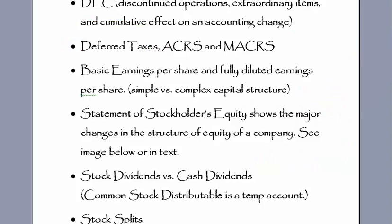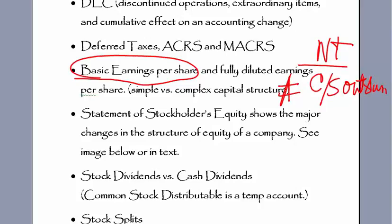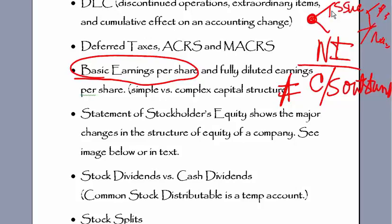Earnings per share: the basics are that you take net income and divide it by the number of shares of common stock outstanding. Remember that we authorize, we issue, and then we have outstanding and treasury. So shares outstanding is the number of shares issued less treasury shares.